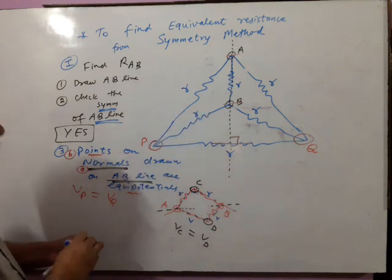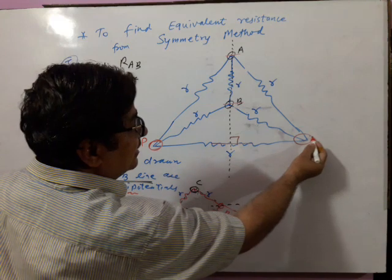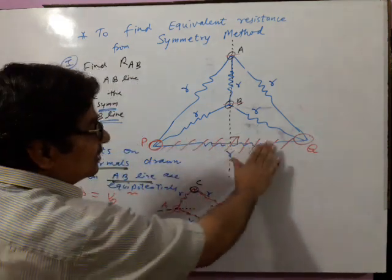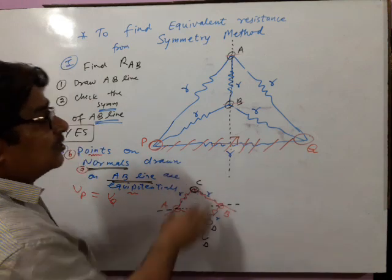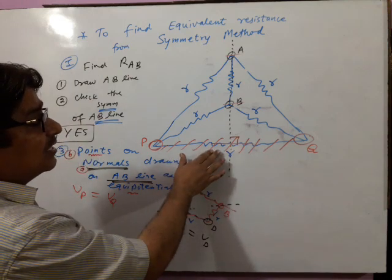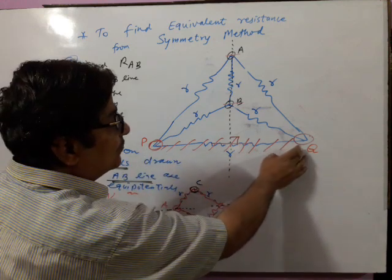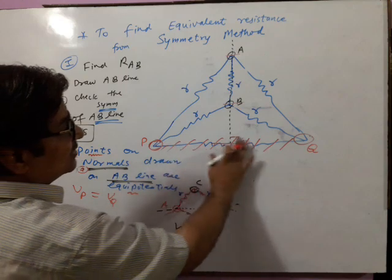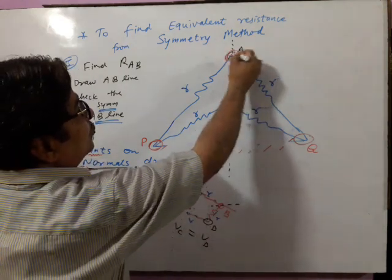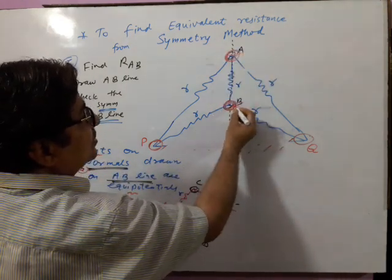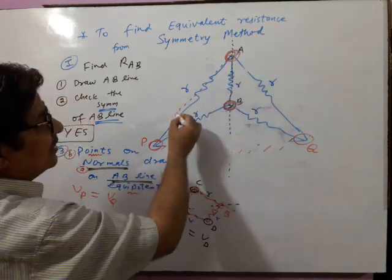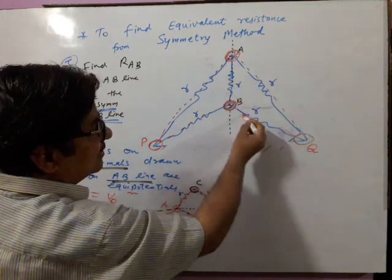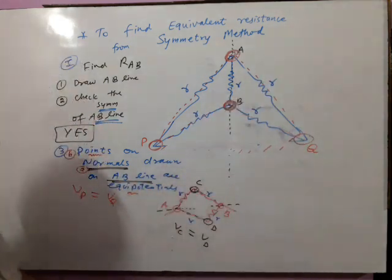Similarly here, if these two points P and Q are at the same potential, this resistance is irrelevant — it will not work. No current passes through this resistance since the potential of P equals the potential of Q. Now, if this resistance is deleted, these are two external junctions. Between A and B, you see these two in series as well as these two in series. Now all three are in parallel.